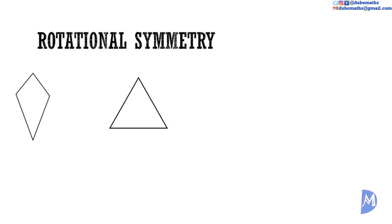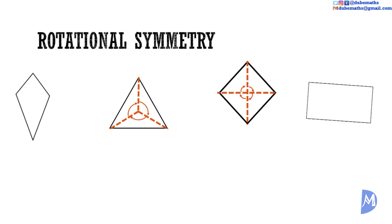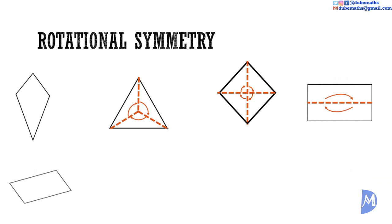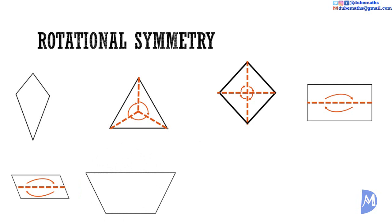The equilateral triangle has rotational symmetry of order three. The rhombus, rotating: one, two, three, four — rotational symmetry of order four. The rectangle: one, two — rotational symmetry of order two. The parallelogram: one, two — rotational symmetry of order two. The trapezium has rotational symmetry of order one; it does not have rotational symmetry.